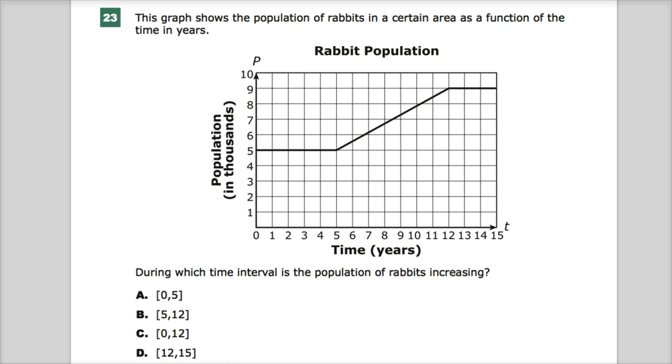The graph shows the population of rabbits in a certain area as a function of the time in years. And the question wants to know, during which time interval is the population of rabbits increasing? I have my notation below.